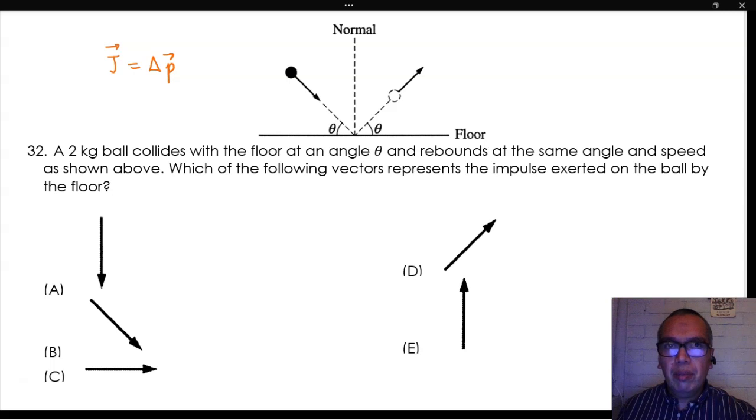The initial momentum, PI, of the ball has the same direction as the initial velocity.